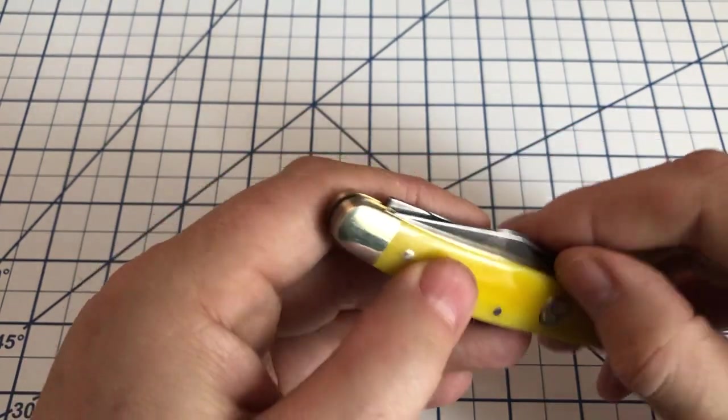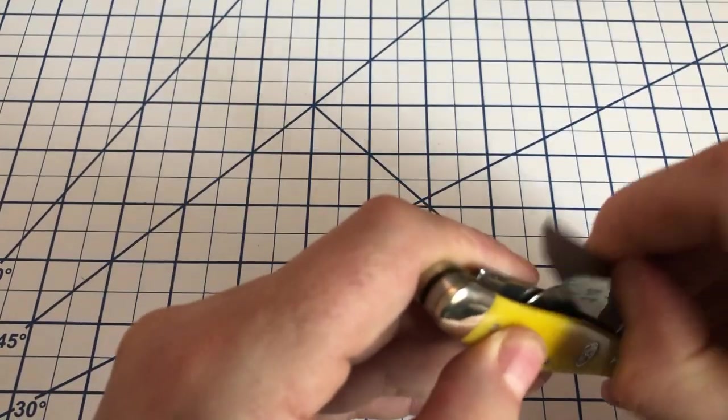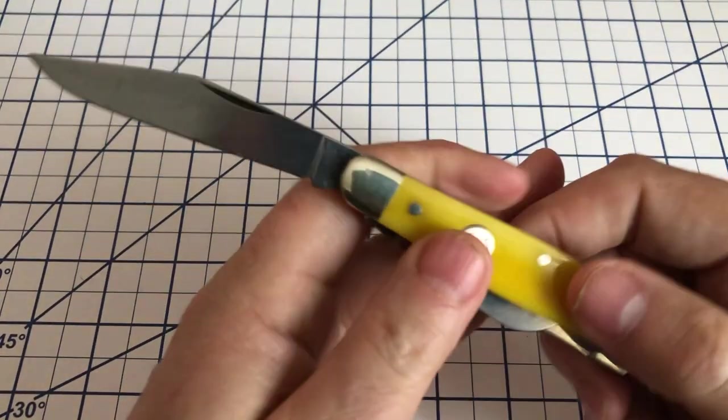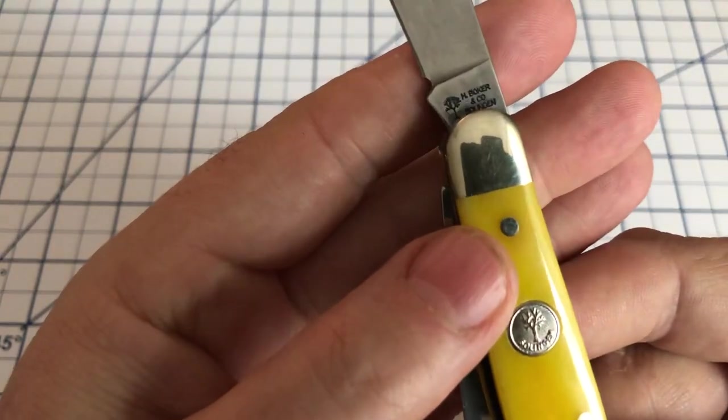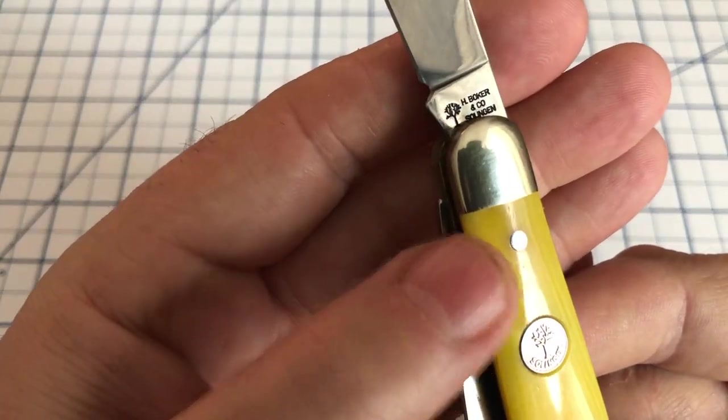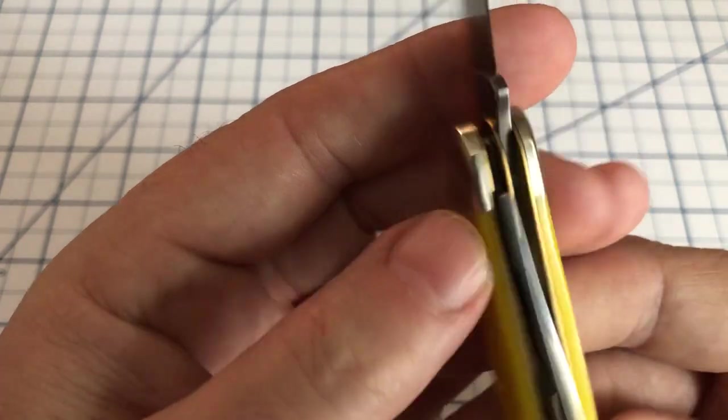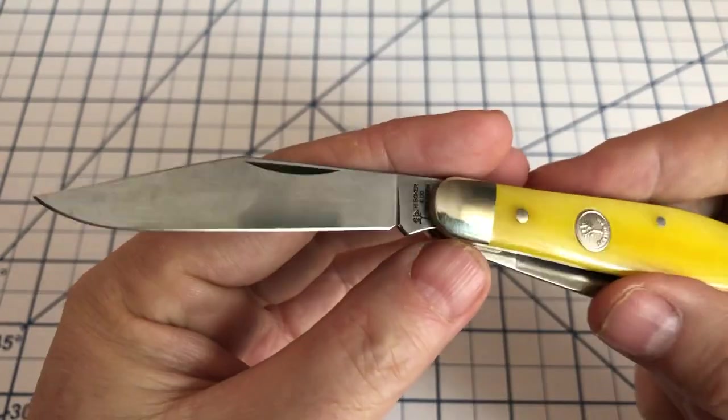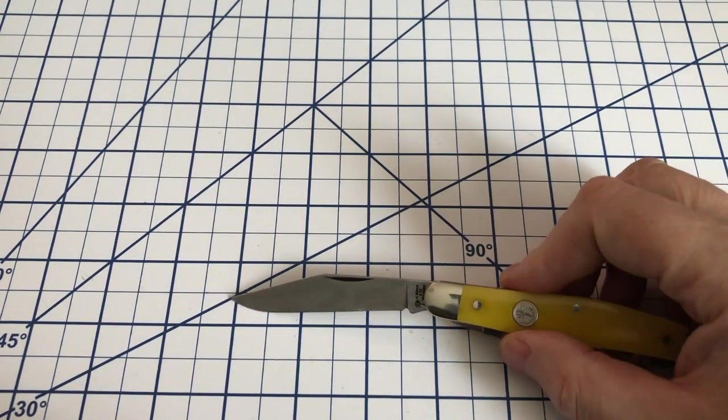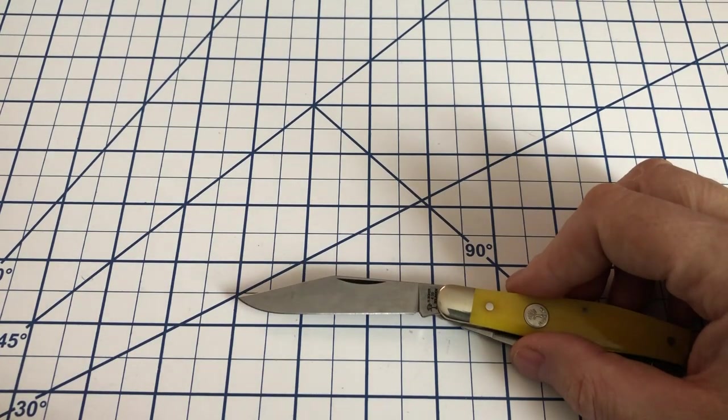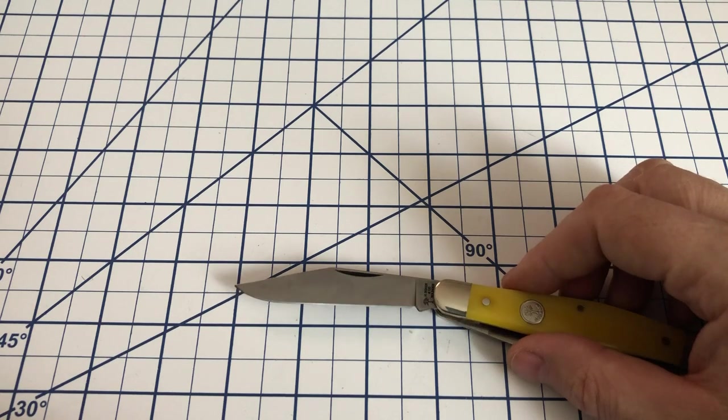These are carbon steel blades and it is the typical Stockman pattern. Now here you see the tang stamp H. Boker and Company Solingen. You have the main clipped blade comes in right around three inches.